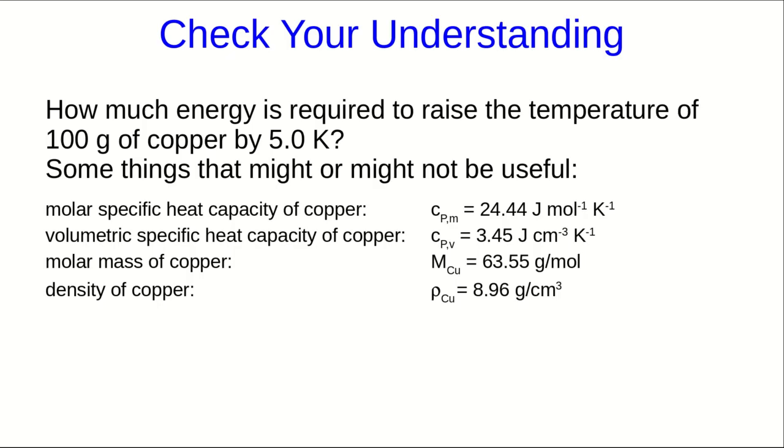Let's check that you're understanding these ideas. So I haven't given you an equation that you can use to do this calculation I'm about to ask you to do, but you should just be able to do unit analysis to figure out how to work this out. So let's find out how much energy is required to raise the temperature of 100 grams of copper by 5 Kelvin. And I've given you a bunch of numbers here, and depending on which way you do it, some of these may be useful and others might not. Now, note, I'm going to tend to specify whether I'm talking about molar specific heat capacities and volumetric specific heat capacities. The subscript P's are just telling you that these are constant pressure heat capacities, but you don't really need to worry about that. I just want you to get used to seeing these subscripts on specific heat capacities. So have a go at this calculation. It's really just a unit analysis issue.